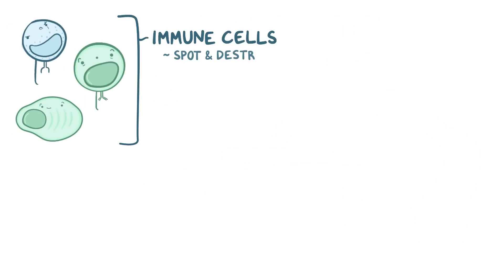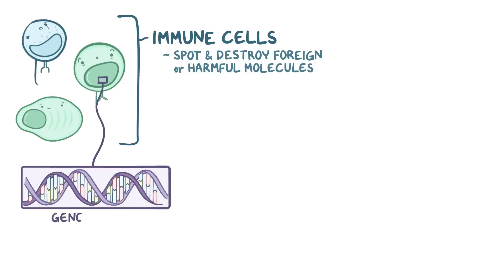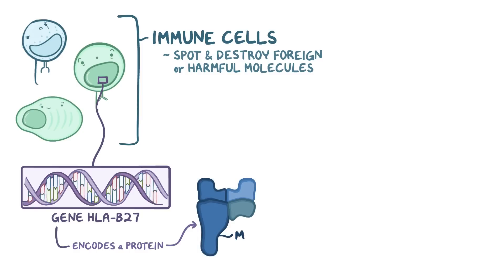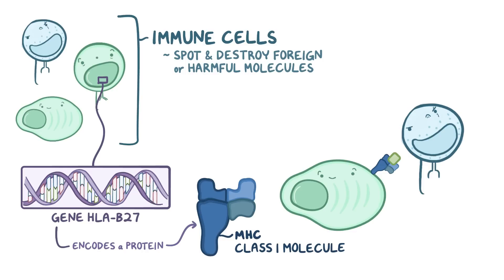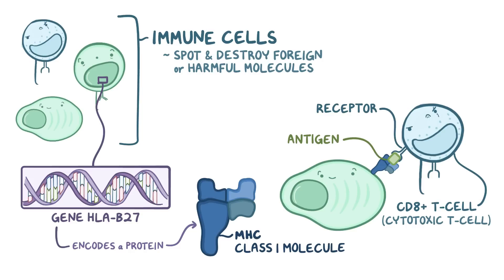Normally, immune cells are ready to spot and destroy anything foreign that could cause the body harm. To help with this, most cells express the gene HLA-B27, which encodes a protein that forms a major histocompatibility complex, or MHC class 1 molecule, that sits on the surface of the cell membrane. This MHC class 1 molecule acts like a serving platter, presenting molecules from within the cell for the immune system to sample. A CD8-positive T cell, also called a cytotoxic T cell, uses its T cell receptor to bind to the antigen presented by the MHC class 1 molecule. Normally the antigen presented is from the cell, and the immune system recognizes it as a harmless self-antigen, which leads to no response.